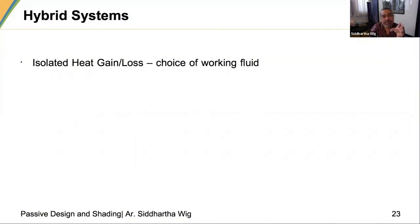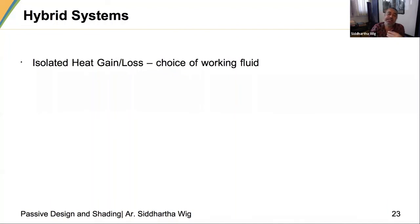In hybrid systems, a lot of variations on isolated heat gain and loss can be done. I did a project up in Shimla where we were able to collect heat from the roof, heat water, transport that water throughout the building, and use radiators in every room. The hot water circulating in the radiators was able to give us good ambient warmth.